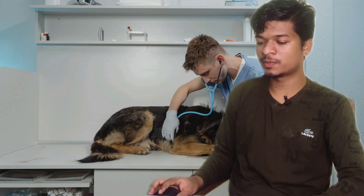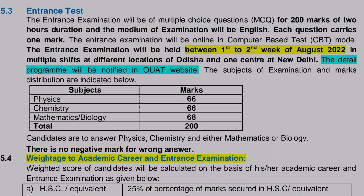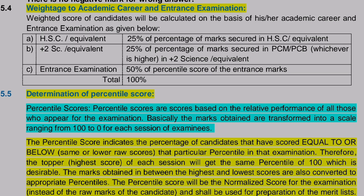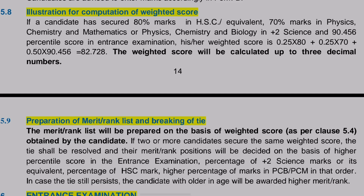The entrance examination is conducted in CBT mode — Computer Based Test. You will appear in Physics, Chemistry, and Mathematics or Biology: Physics 66 marks, Chemistry 66 marks, and Math or Bio 68 marks, totalling 200 marks. If you want to take admission in Veterinary Science, you must appear in Physics, Chemistry, and Biology, and must also have PCB in Plus 2 Science. The selection process: 25% from class 10, 25% from class 12, and 50% from the entrance examination.